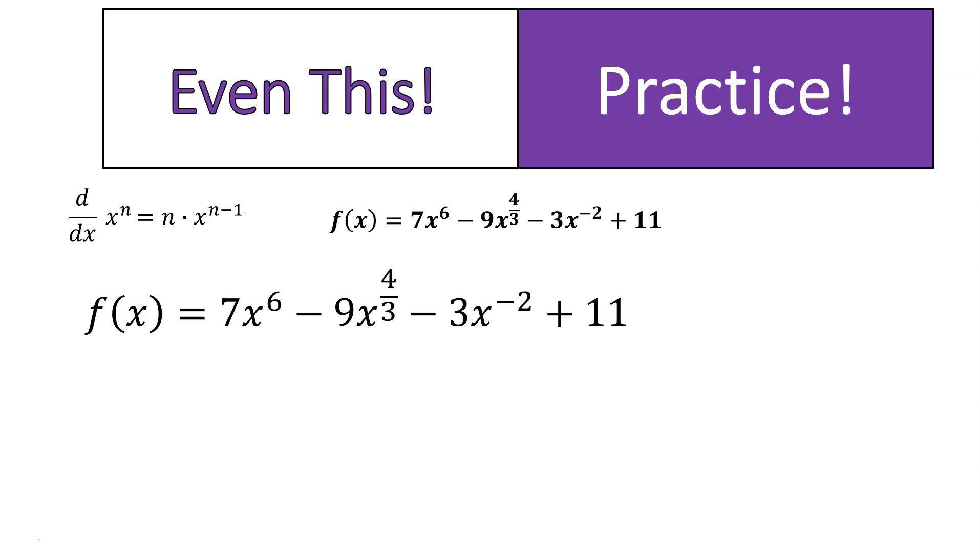Here we go. Let's follow the same exact rules to find the derivative. 6 times 7 is 42. 6 minus 1 is 5. Boom. 42x to the power of 5. Now, this one's a little more complicated. We do have to multiply 4 thirds times 9. Fortunately, that gives us a nice number. But we also have to reduce our 4 thirds by 1. So I'm saving you a step here by subtracting 3 over 3, which is equal to 1. And going back to our middle school math, I'm subtracting fractions. We do have to have a common denominator. So when we do that, we end up with negative 12x to the power of 1 third.